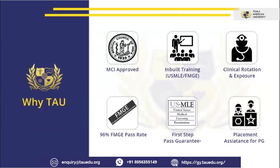Why Texila American University? First and foremost, it is MCI approved and listed and recognized by the Medical Council of India. You have both options after completing your 5-year MD program, with a good passing ratio in both — whether in terms of USMLE or the FMG exam. The FMG (Foreign Medical Graduate) exam is the exam you appear for if you are willing to come back to India after your 5-year MD program, and the passing ratio is also very good at Texila American University — almost more than 96%.